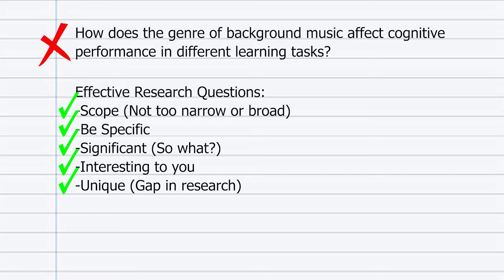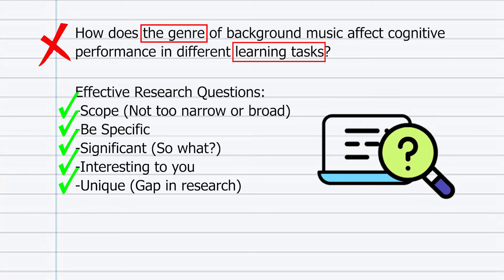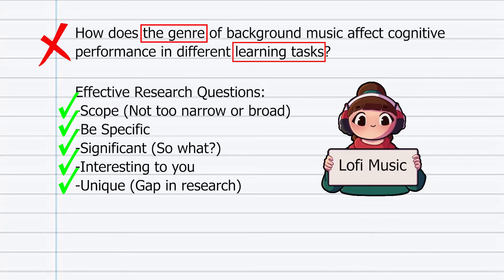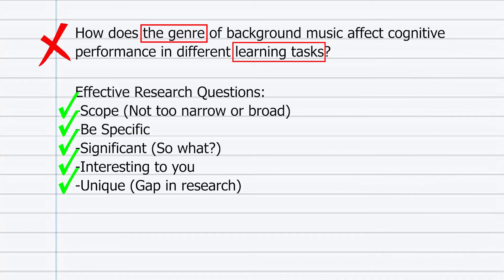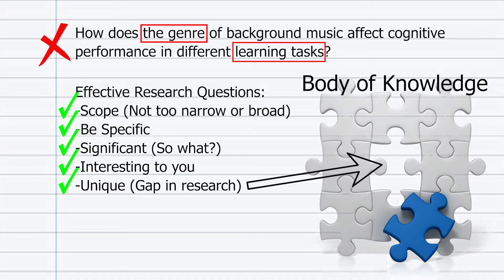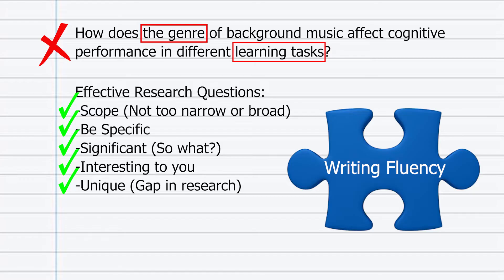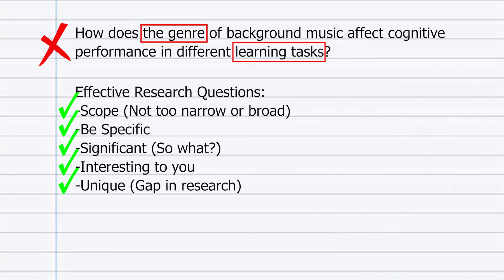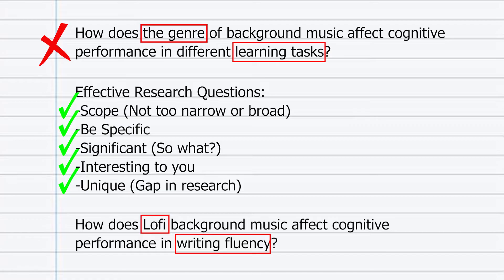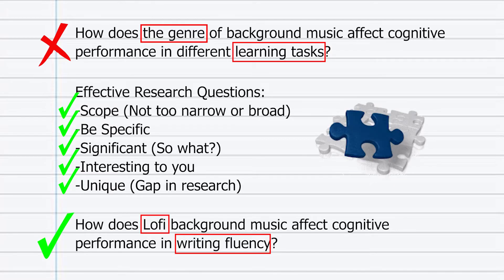With this in mind, we can adapt the research question created by ChatGPT. Firstly, we should identify the variables: in this case, the genre of music and different learning tasks. Following some preliminary research, I decided to investigate lo-fi music as my specific genre. From reading various sources, I discovered a gap: other studies have investigated reading fluency and memory, but no one has yet looked at writing fluency. Therefore, I can change the research question to: How does lo-fi background music affect cognitive performance in writing fluency? Now we have our own research question, developed with the help of AI as our brainstorming partner.